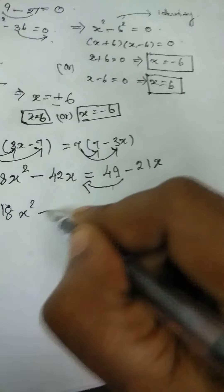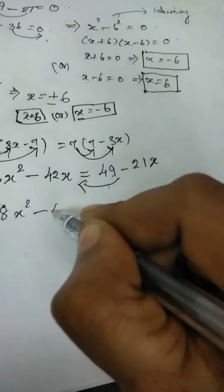So these 2 numbers you transpose LHS side. Next you get 18x square minus 42x and plus 49 will change into minus 49 and minus 21x will change into plus 21x is equal to 0.